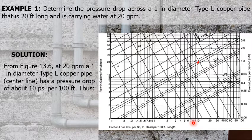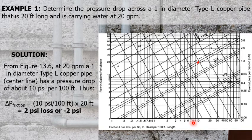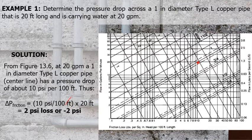From Figure 13.6, at 20 GPM, a 1-inch diameter type L copper pipe has a pressure drop of about 10 psi per 100 feet. Thus, to compute for the pressure drop of the problem, we simply multiply 10 psi per 100 feet with the length of the pipe, which is 20 feet, so that this unit will be cancelled. Calculating, that is equal to 2 psi loss, or negative 2 psi, which is the pressure drop.